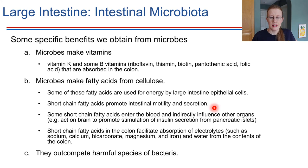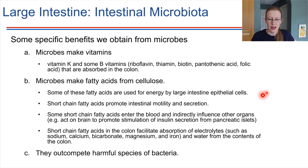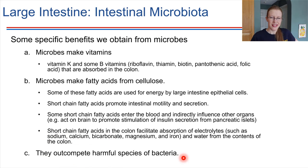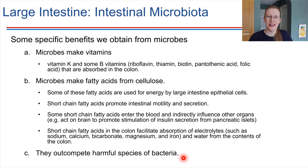Some short-chain fatty acids act as messenger molecules — they can act on the brain and influence insulin secretion, which is a complex and interesting relationship. Some of the fatty acids produced also help us absorb electrolytes and in turn water. These are all just consequences of microbes doing their own thing — digesting cellulose — and we get a number of benefits. Finally, beneficial bacteria simply by being there mean that harmful bacteria can't occupy that space. They're good neighbors: if you have good neighbors, there's no room for bad ones.